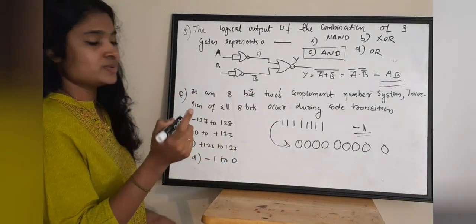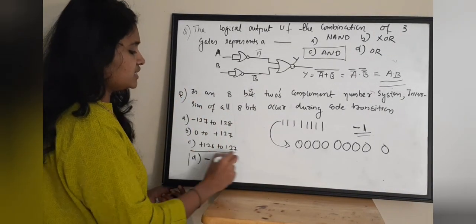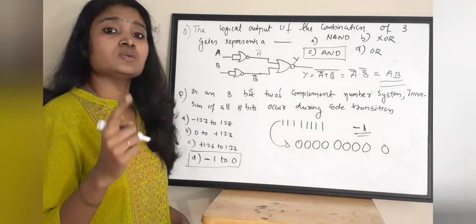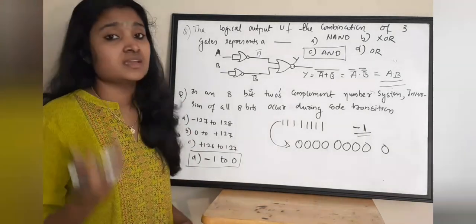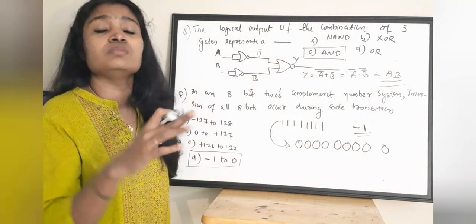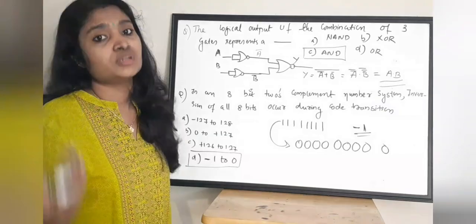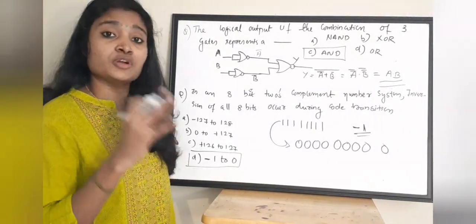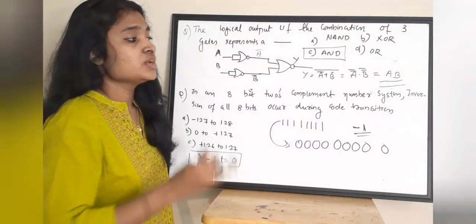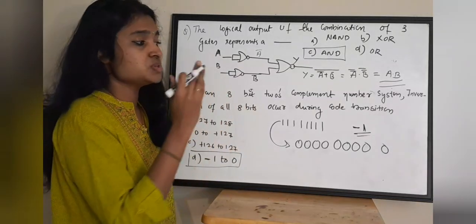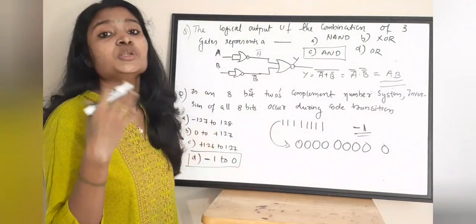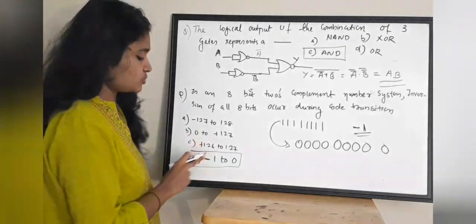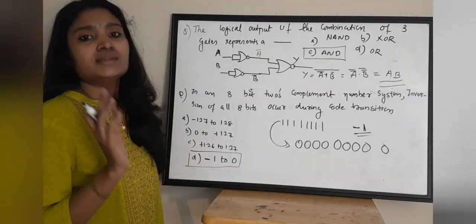For this question, the correct answer is option D. From minus 1 to 0, all 8 bits are inverted according to the 2's complement number system. The correct answer is option D.